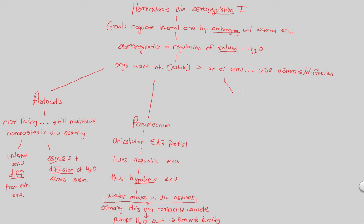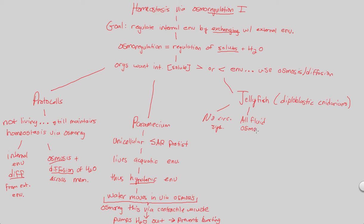The last simple organism example is jellyfish. We are now moving from unicellular to multicellular organisms. Jellyfish are diploblastic cnidarians — they have two germ layers, making them very simple, basal animals. They have no circulatory system, and because of this, all fluid regulation is osmoregulated via a very simple process called diffusion — using osmosis and diffusion to regulate internal solute concentration relative to the environment.